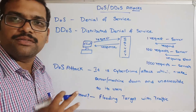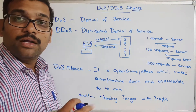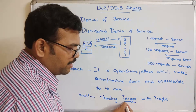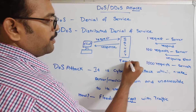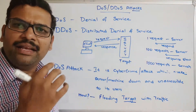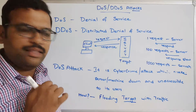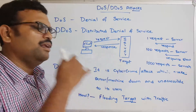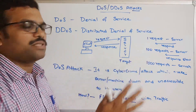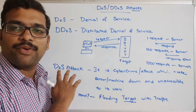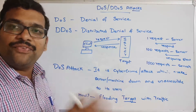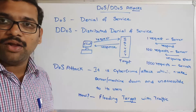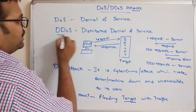If the same thing happens with a thousand requests, the server obviously can't respond to all of them and becomes inaccessible. So the attacker floods the target — which could be a server, any machine, resource, or network — with a large number of traffic requests, so the server can't respond to each and every request. That's what we call a Denial of Service attack.